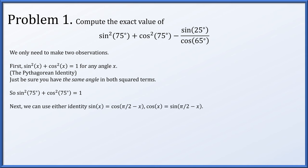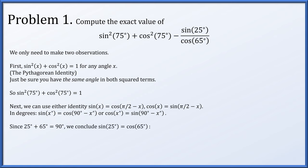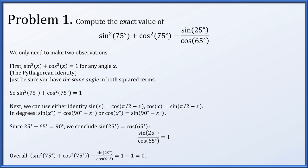Also, there are two identities that essentially mean the same thing: sine of x equals cos of π/2 minus x, or cos of x equals sine of π/2 minus x. In degrees, sine of x degrees equals cosine of 90 degrees minus x degrees. Since 25 plus 65 is 90, the sine of 25 degrees equals the cosine of 65 degrees. So the ratio sine of 25 degrees over cos of 65 degrees equals 1. Altogether, we have 1 minus 1, which is exactly equal to 0.